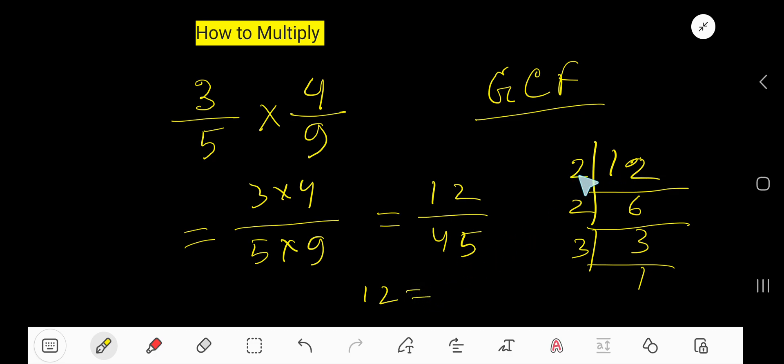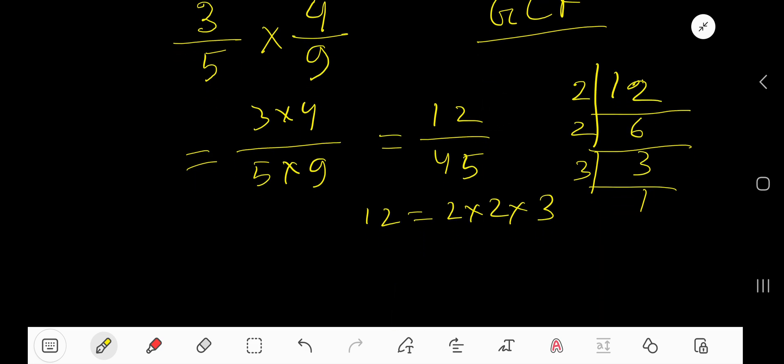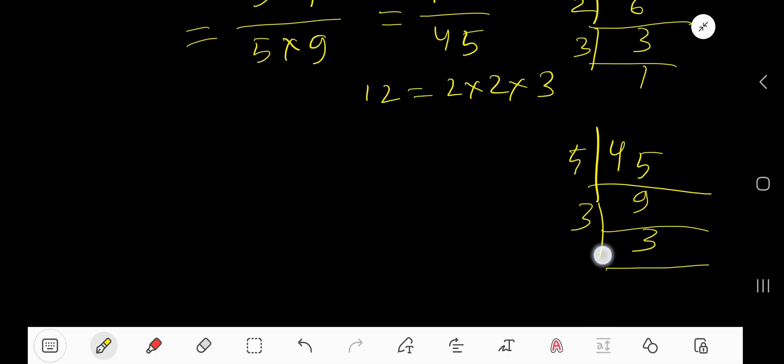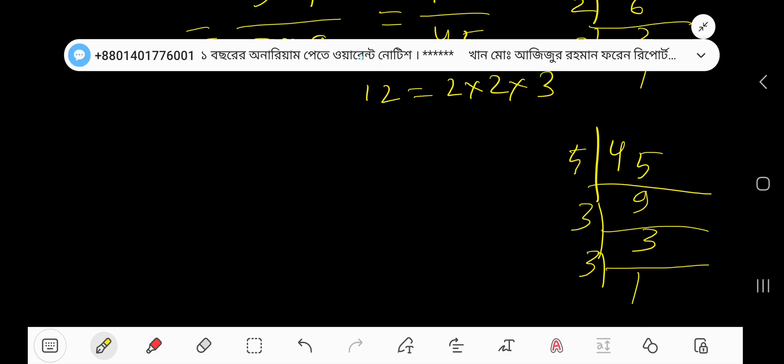That is, 12 equals 2 times 2 times 3. These three are the factors of 12. And the factors of 45: look, 45 is divisible by 5, you are getting 9. This 9 is divisible by 3, so you are getting 3. This 3 is divisible by 3, so you are getting 1.